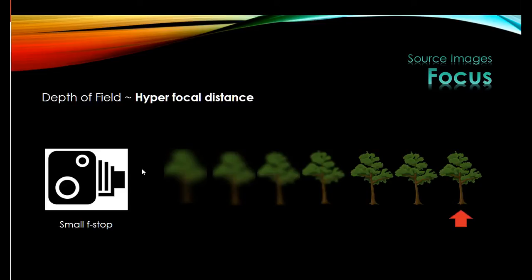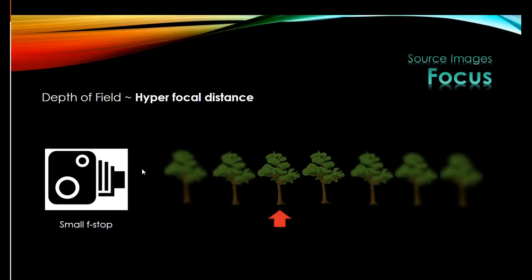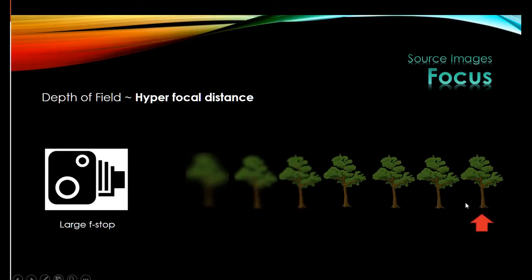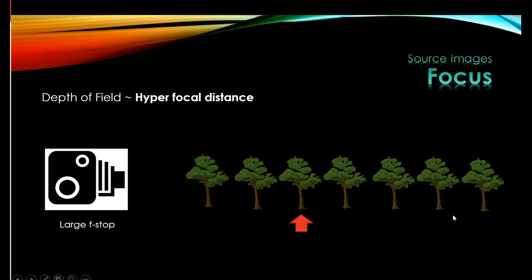One way to deal with that is to use hyperfocal distancing. If you've done your 103 recently you'll have talked about this when you're doing landscapes. Rather than using a small f-stop which has a shallow depth of field, we're going to use a large f-stop and then focus about two-thirds of the way towards the camera. There are tables and charts that will tell you just how much will be in focus depending on how far away that object is, what your f-stop is, and what your camera is. Generally: large f-stop and focus about two-thirds of the way from the horizon, and you end up with things behaving themselves reasonably well.